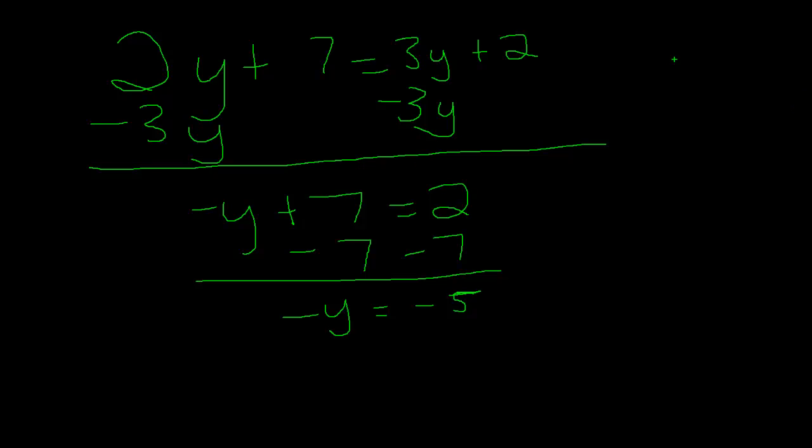When you have y equals 5, it's basically like saying 1y equals 5. The 1 is a hidden coefficient. Now, a coefficient is simply put, the number next to the variable. For example, 4